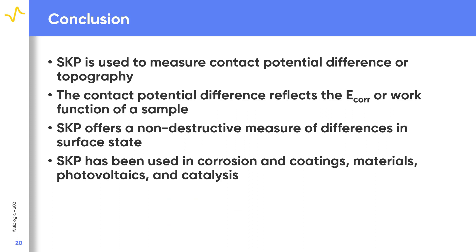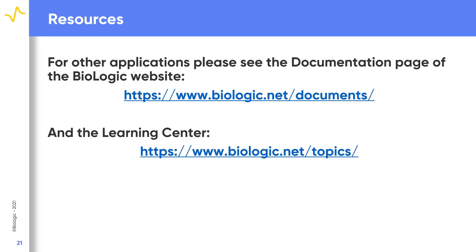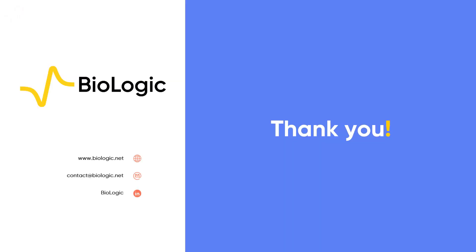To summarize, we have shown that SKP can be used to measure either contact potential difference or sample topography. The contact potential difference measurement can be used to determine the corrosion potential or work function of a sample, meaning SKP offers a non-destructive measure of differences in the sample surface state. Because of these and other advantages, SKP has found use investigating corrosion, coatings, materials, photovoltaics, and catalysis samples. Please visit our website for further information on the background and applications of SKP. If you have any questions or require further information on the SKP 470, please contact your local Biologic representative.